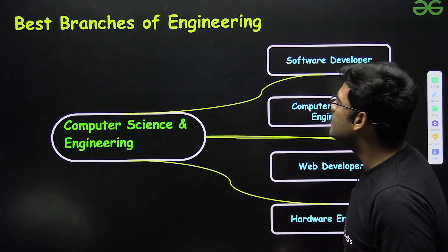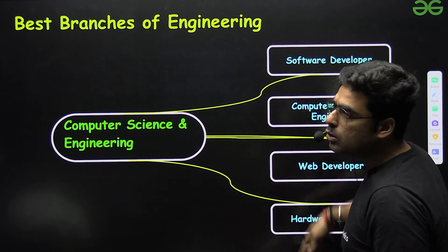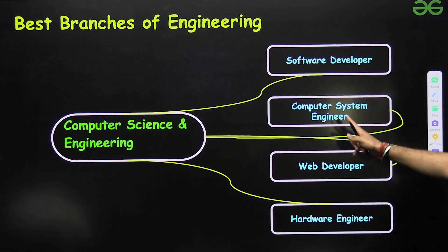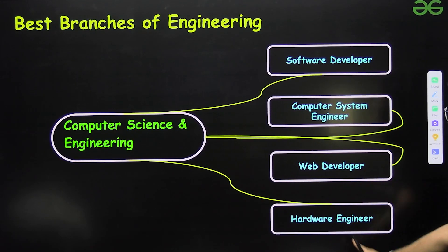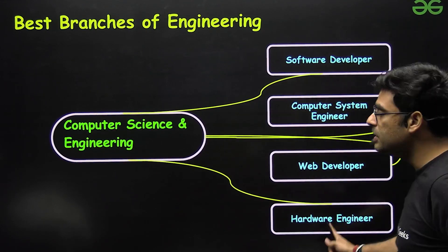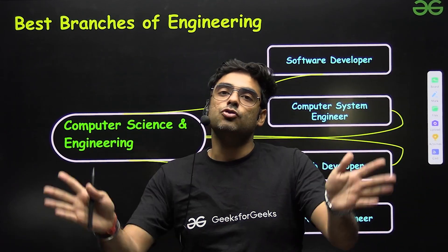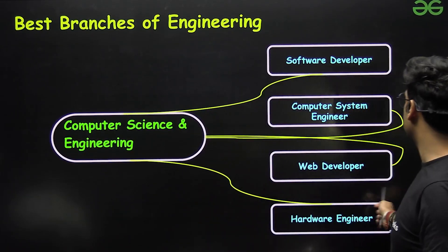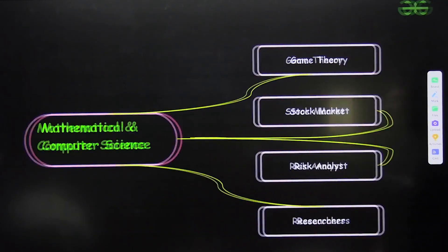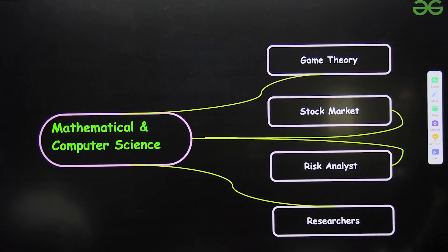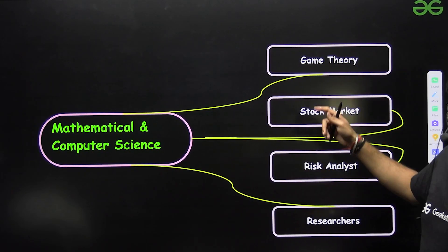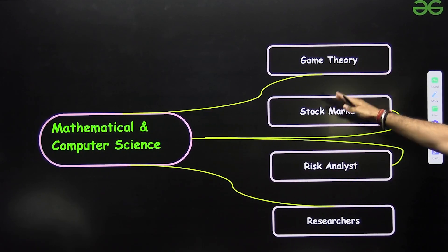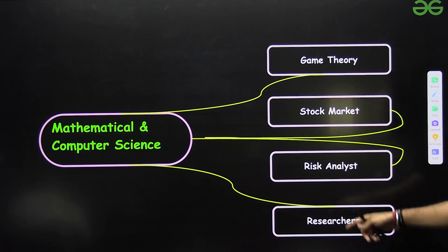Now I'll discuss branches and good career options. For CSE: software developer, computer systems engineer, web developer, and hardware engineer — these are highly paid jobs. For mathematical and computer science: game theory is a very in-demand domain, as well as stock market roles, risk analyst, and researchers. Researchers are in very high demand nowadays because we have very few good researchers publishing quality papers and journals.